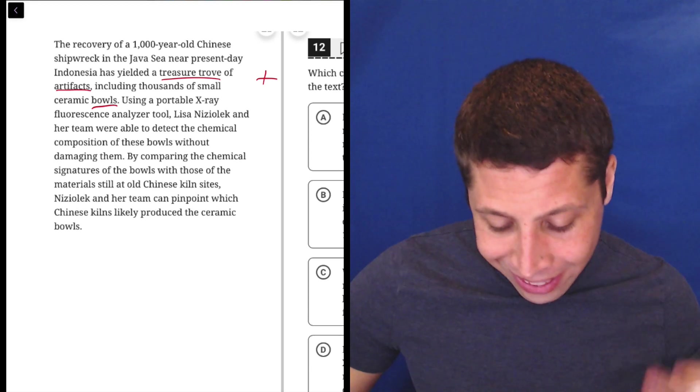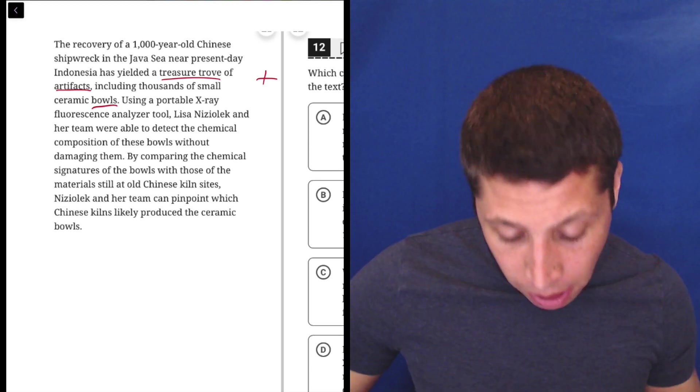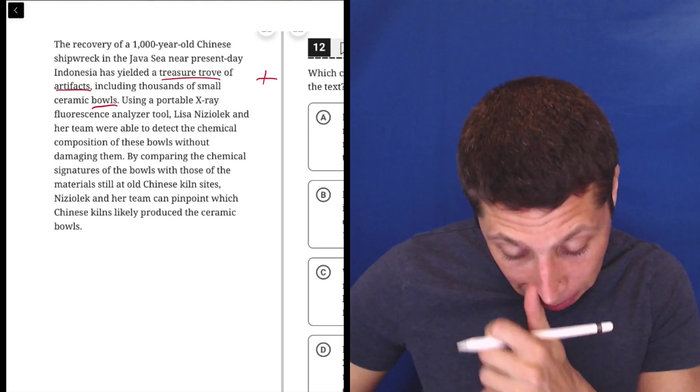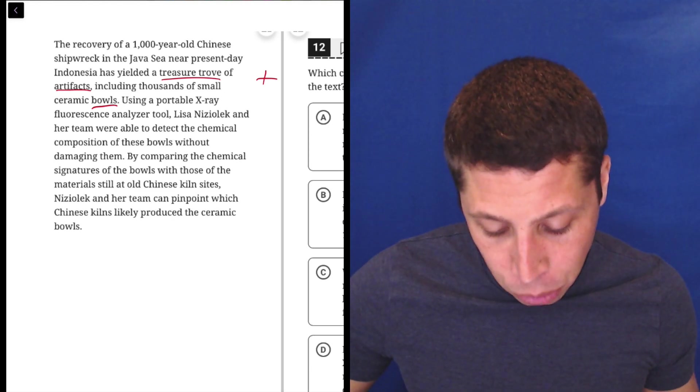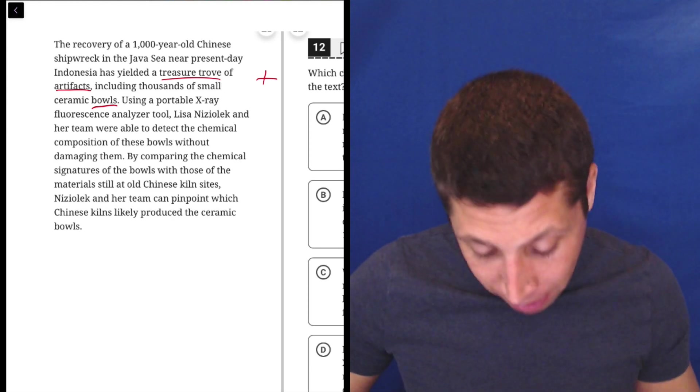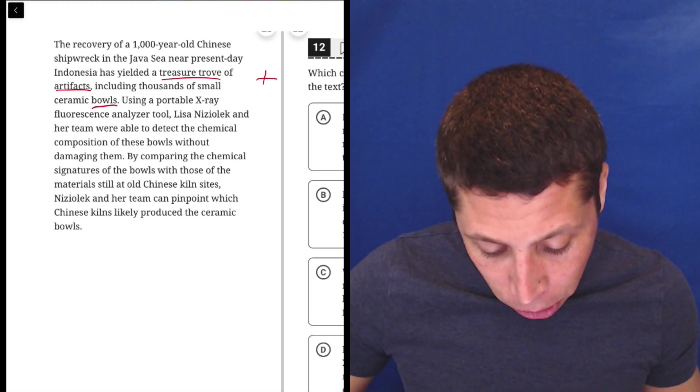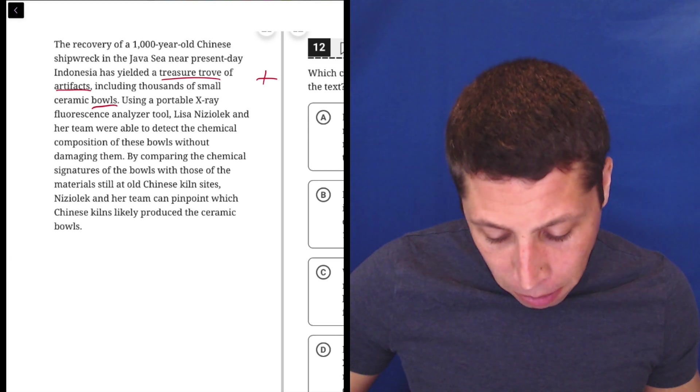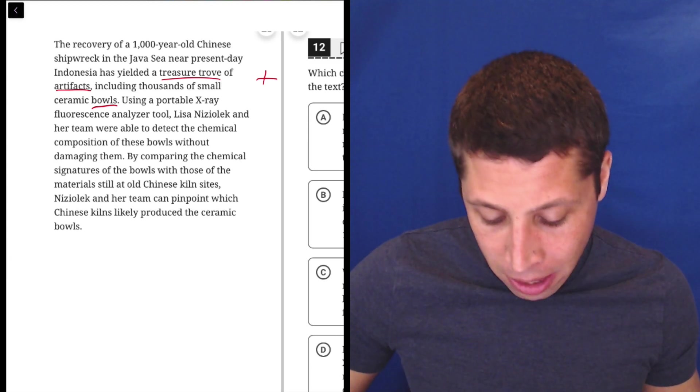Using a portable x-ray fluorescence analyzer tool, don't know what that is, don't care. Lisa Niziolek and her team, don't know who they are, don't care, were able to detect the chemical composition of these bowls without damaging them. Great. By comparing the chemical signatures of bowls with those of the materials still at old Chinese kiln sites, Niziolek and her team can pinpoint which Chinese kilns likely produced the ceramic bowls.